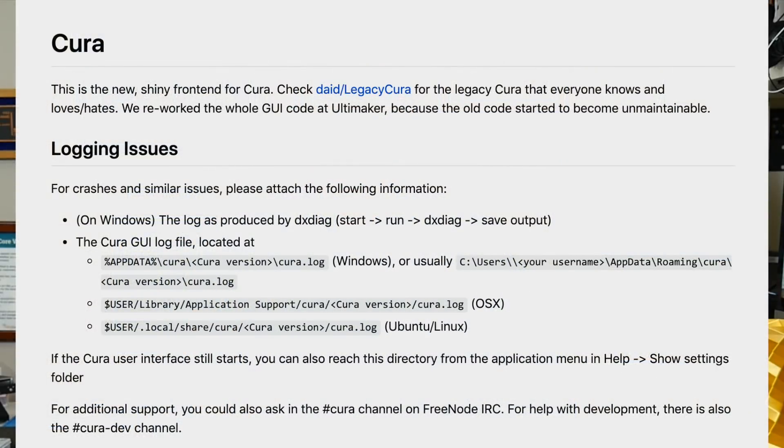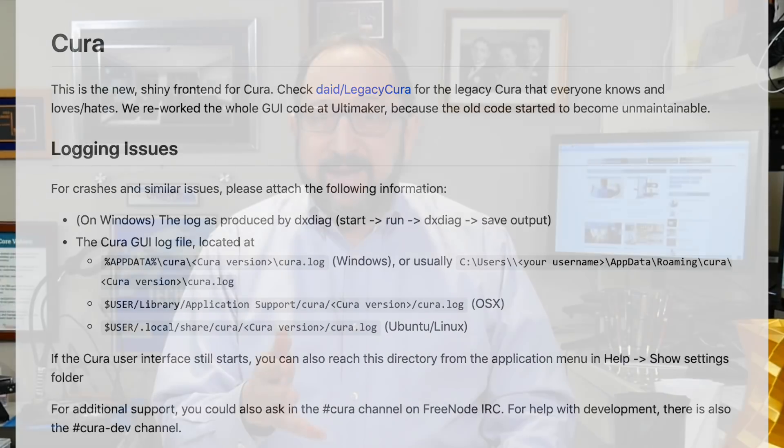Cura is really just a user front end, a graphical user interface for the Cura engine, which is the back end. Cura is written in Python. The Cura engine is written in C++. The Cura engine was only modestly updated — there were about 300 commits, but many of those commits were minor bug fixes along the path.